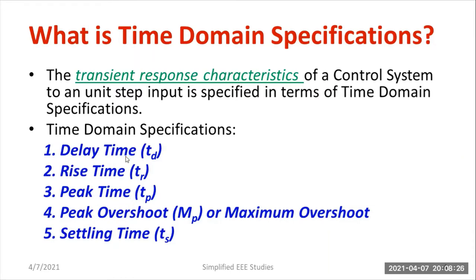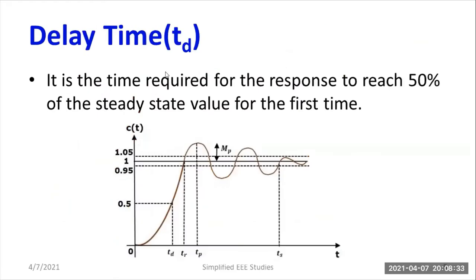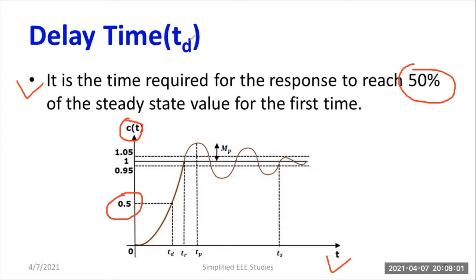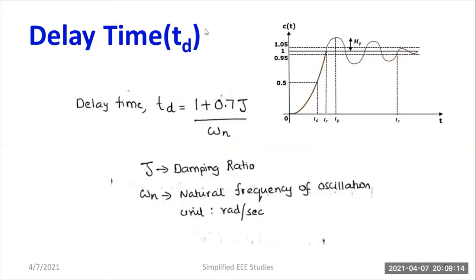Let's understand what do you mean by delay time, rise time, peak time, peak overshoot, and settling time. First and foremost, let me move on to delay time. Delay time is the time required for the response to reach 50% of the steady state value for the very first time. You can observe the response C(t) versus time: the time taken to reach 50% of the response is generally called delay time, represented by the letter Td.